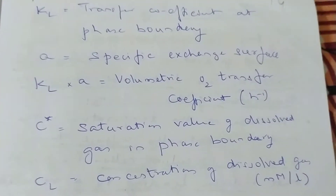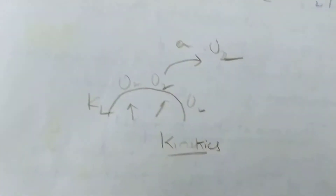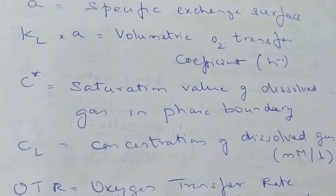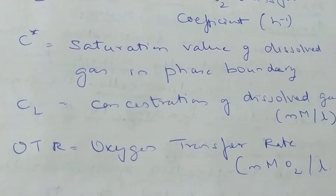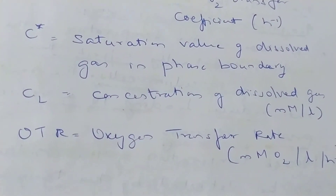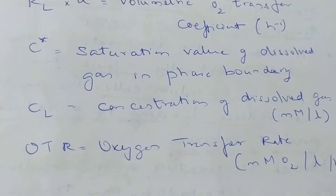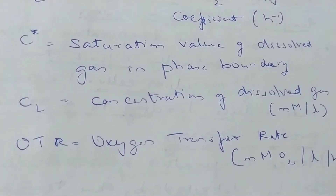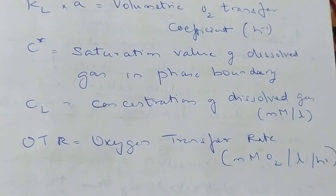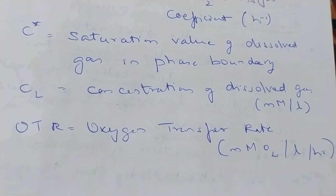Coming back to the formula: kL·a is the volumetric oxygen transfer coefficient. kL·a together means what is at the boundary and what is outside — both together. So kL·a is the volumetric oxygen transfer coefficient. Now, C* means the saturation value of dissolved oxygen at the phase boundary — how much saturation has happened there. The phase boundary can be the gas-liquid phase or the fluid-cell phase — either one. That is the saturation value.